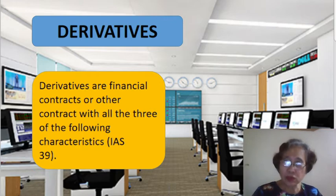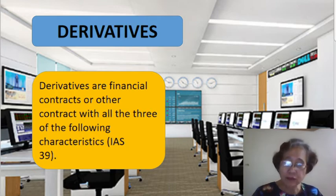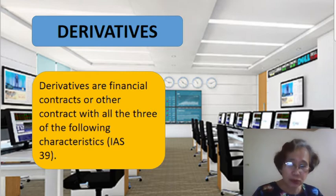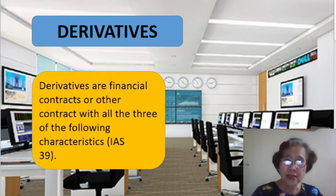First, we are going to state the objectives. Number one, define derivatives and state the purpose or purposes why we issue derivatives. Number two, state the characteristics of derivatives. And number three, define and give examples of hedging in connection with derivatives.